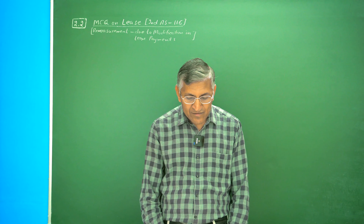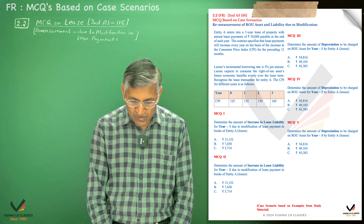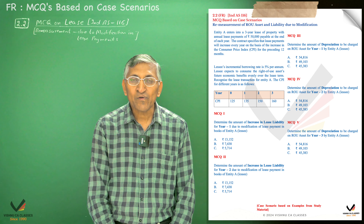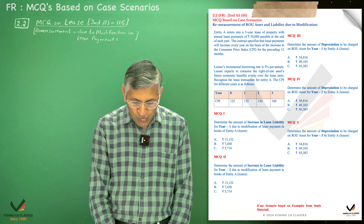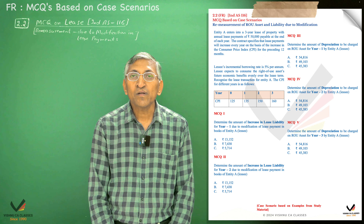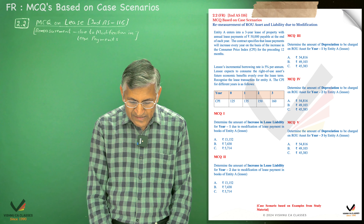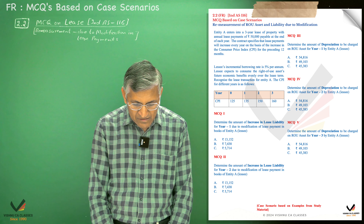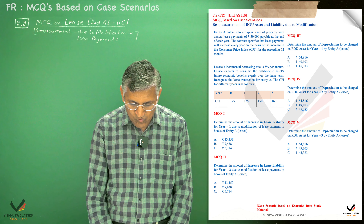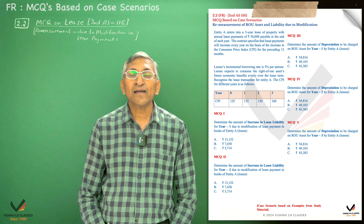Given in this scenario, entity A enters into a 3-year lease of property with annual lease payment of Rs. 50,000 payable at the end of each year. The contract specifies that lease payments will increase every year on the basis of the consumer price index (CPI) for the preceding 12 months. The incremental borrowing rate is 5% per annum. Entity A expects to consume the right-of-use asset's future economic benefits evenly over the lease term.